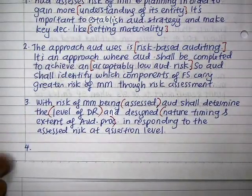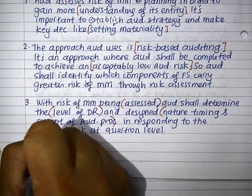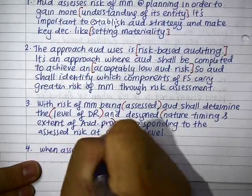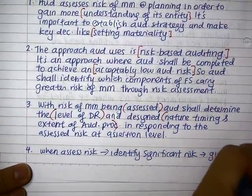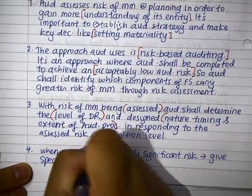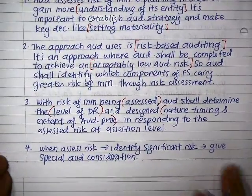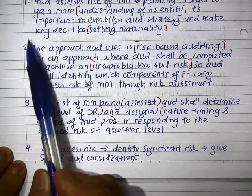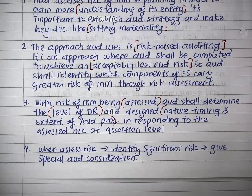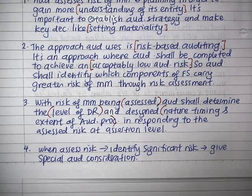Number four: when you assess risk, you identify the significant risks of the audit that must be given special audit attention. This kind of answer is not writing keywords in bullet list form — you must write a full elaborate answer because they asked you to discuss. If you write just bullet keywords, I'm sorry, you'll get zero.